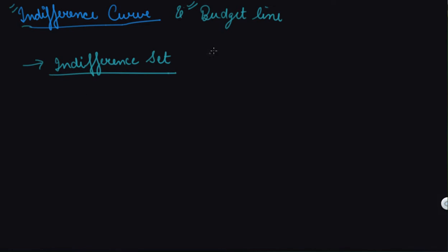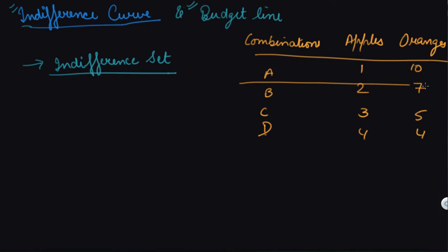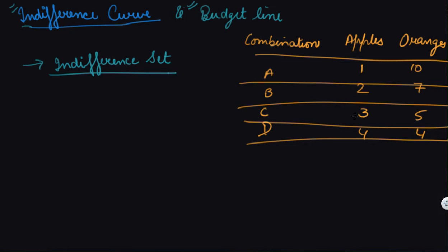Before learning what an indifference curve is, let us understand what an indifference set is. There are combinations A, B, C, and D involving apples and oranges. You have a constant income and the prices of apples and oranges are also given. You can buy one apple and ten oranges, or two apples and seven oranges, or three apples and five oranges, or four apples and four oranges.